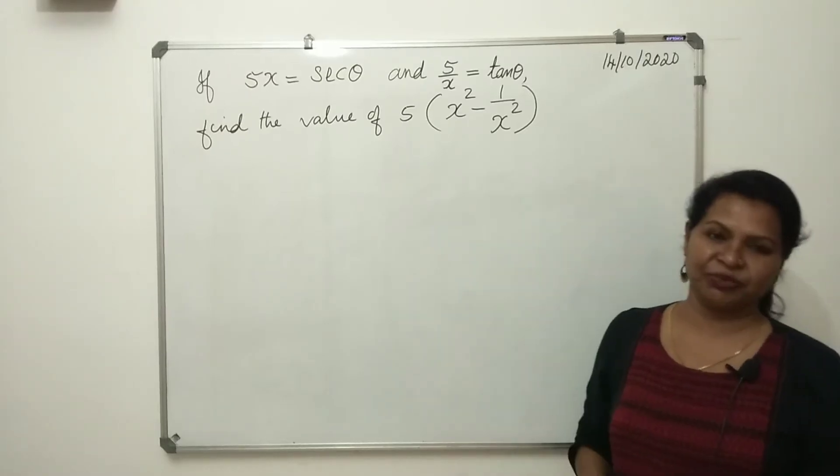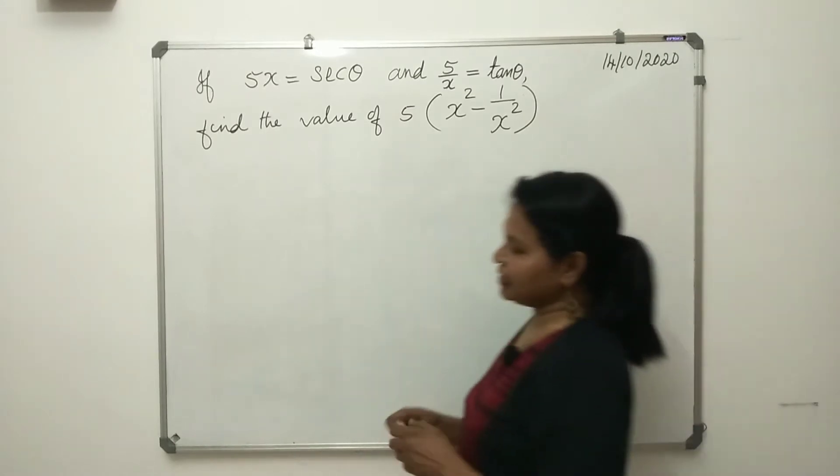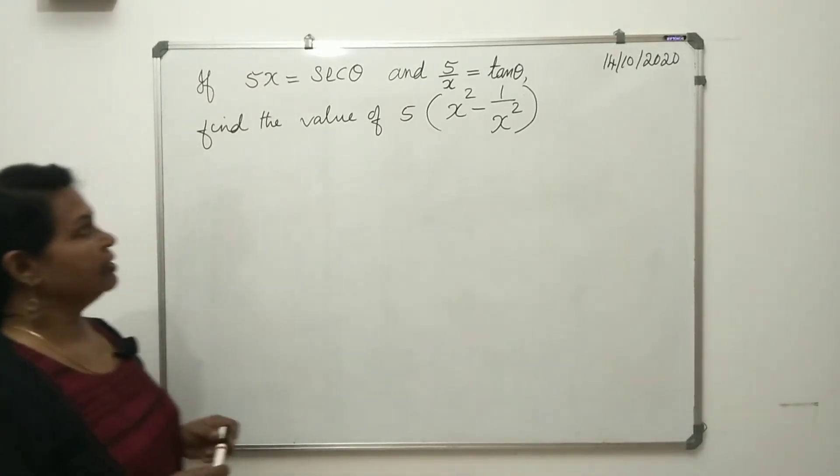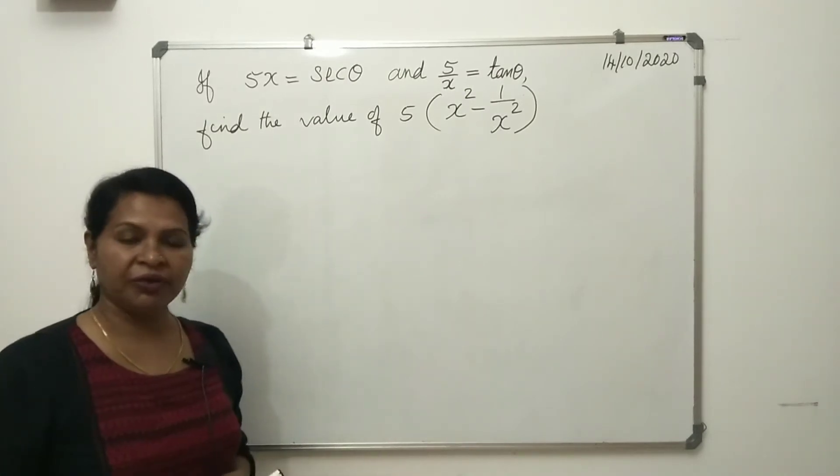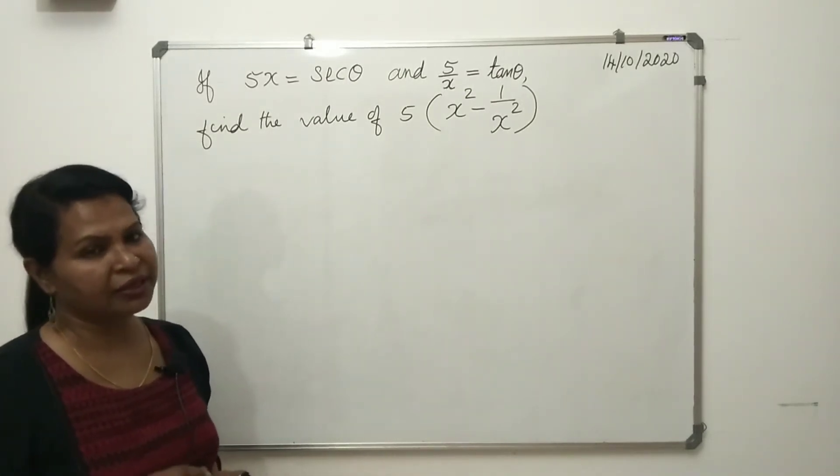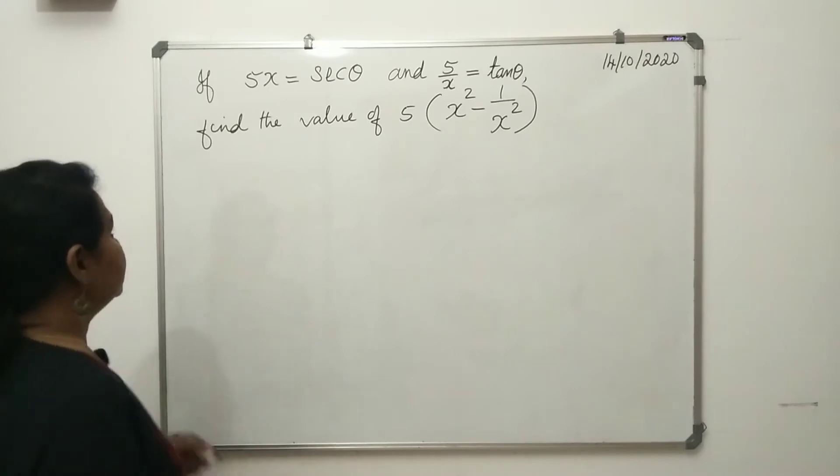Hi everyone, this is the question for the day. If 5x equals secθ and 5 divided by x equals tanθ, find the value of 5 times (x² - 1/x²). Okay, so we have secθ equal to 5x and tanθ equal to 5 divided by x.